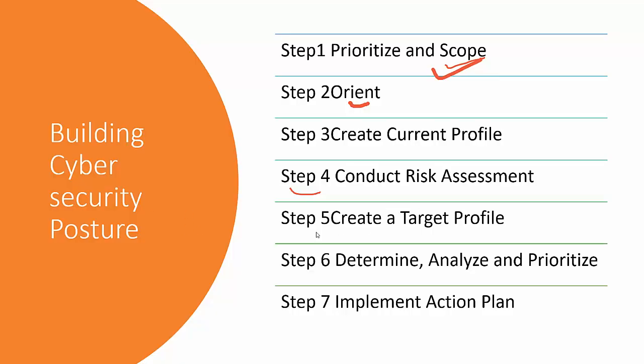The fifth step is Create a Target Profile — what cybersecurity posture does the organization need to achieve? In the target profile we document the respective controls, processes, and categories required in the system, and then prioritize what needs to be implemented first, which is addressed in Step 6.